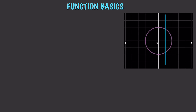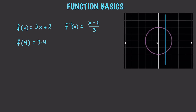We also have inverse functions. Two functions that accept and transform a value of x — the inverse of that function sets x back to what it originally was. For example, f(x) = 3x plus 2, and its inverse — denoted with a negative 1 — is (x minus 2) over 3. If our function has a value of 4: 3 times 4 plus 2 equals 14. Then the inverse gives us (14 minus 2) over 3, which gives back our original value of 4.